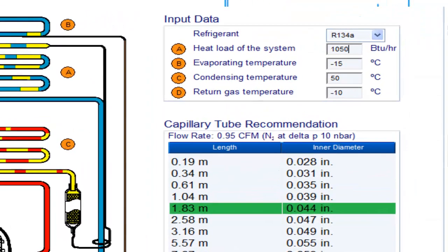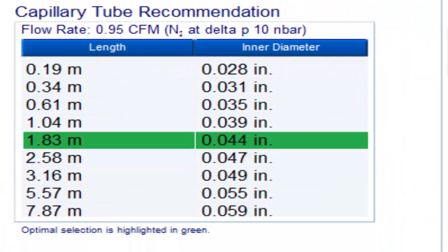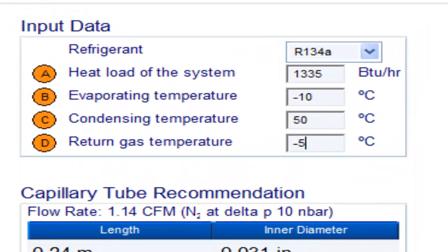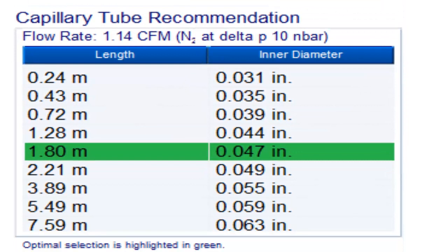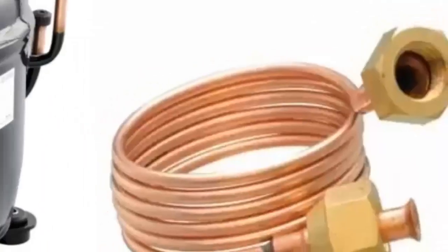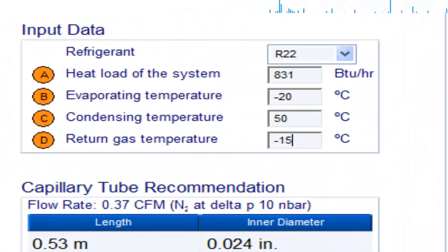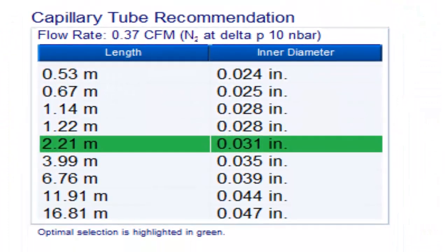For a one-fifth of a horsepower compressor with R404A refrigerant and an evaporation temperature of minus 15 degrees Celsius, the following measurements are available. For R404A with an evaporation temperature of minus 20 degrees Celsius, the following measurements are available. For R404A with an evaporation temperature of minus 10 degrees Celsius, the following measurements are available.